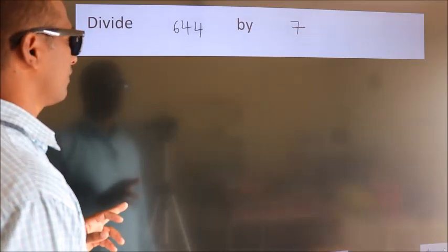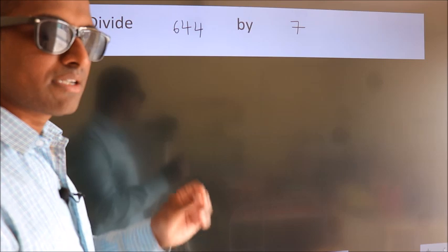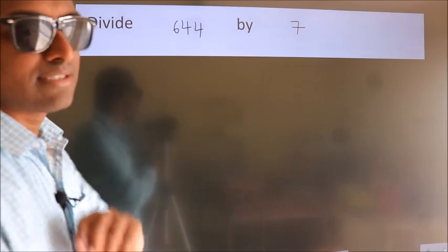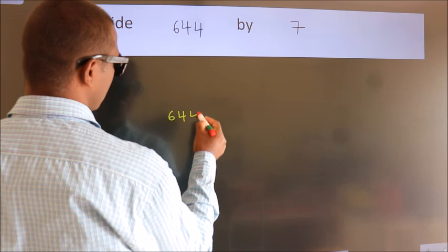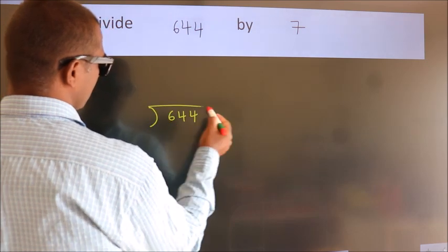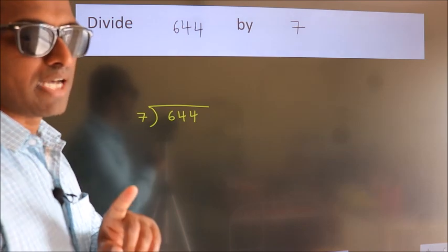Divide 644 by 7. To do this division, we should frame it in this way. 644 here, 7 here. This is your step 1.